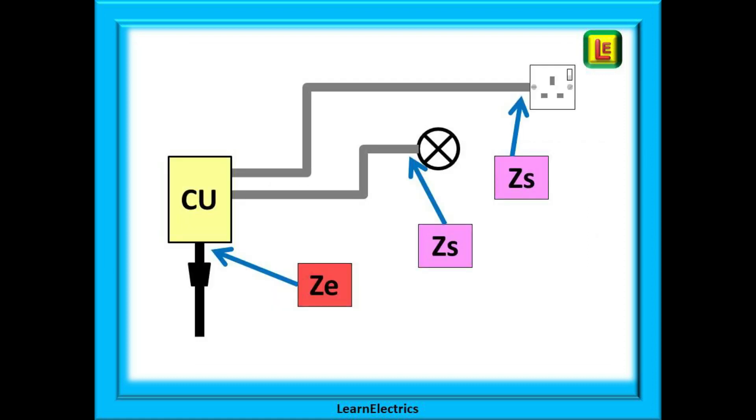Here we have a consumer unit with an incoming supply and we can measure ZE at the main switch of this consumer unit. Several circuits leave the consumer unit and go to the sockets, the lights etc. At each of these sockets, the lights, the cooker, the shower and so on we will measure ZS. We will have lots of ZS's but only one ZE in the property. So far so good.